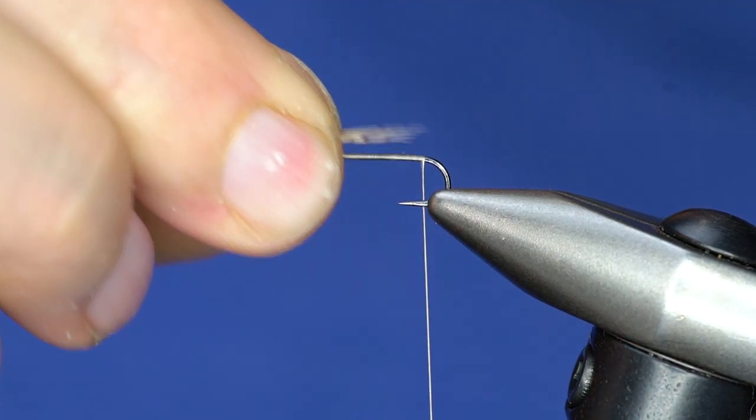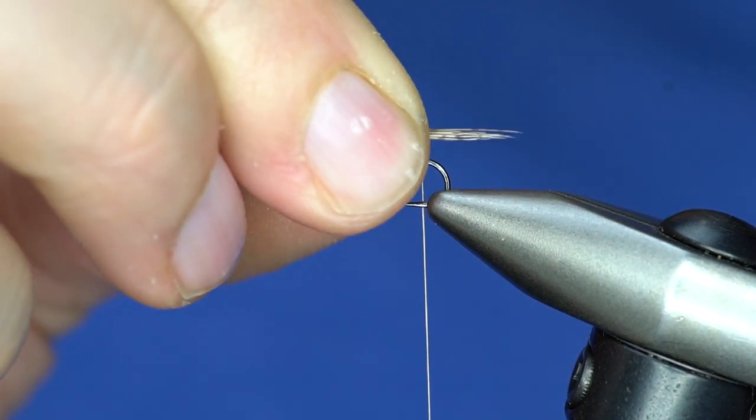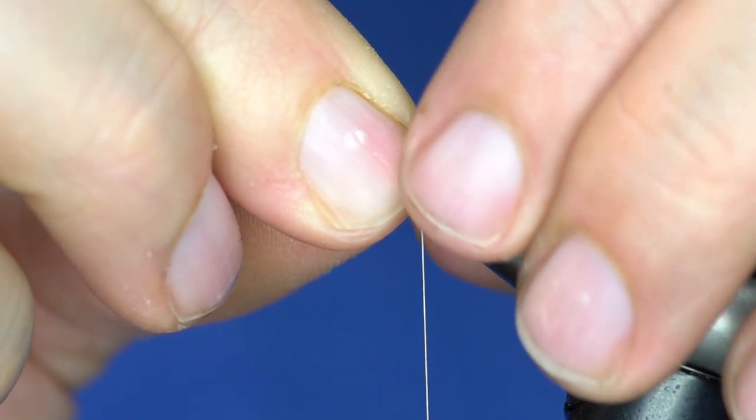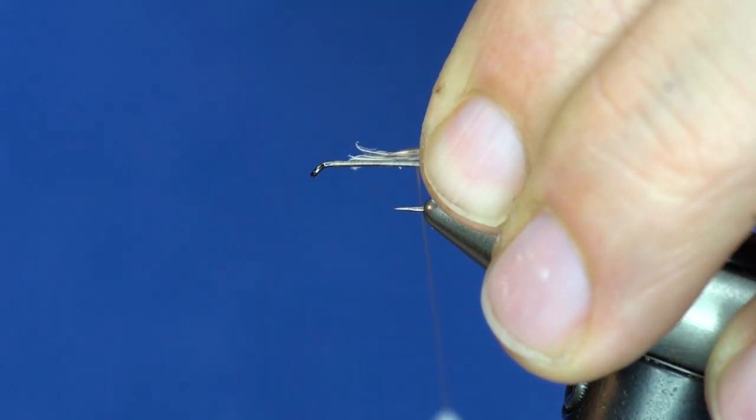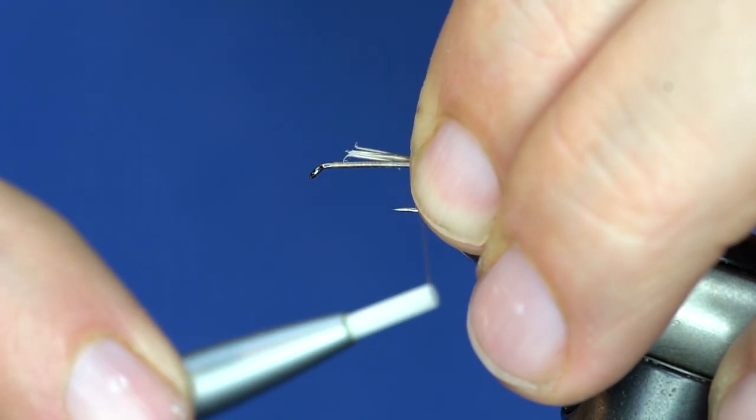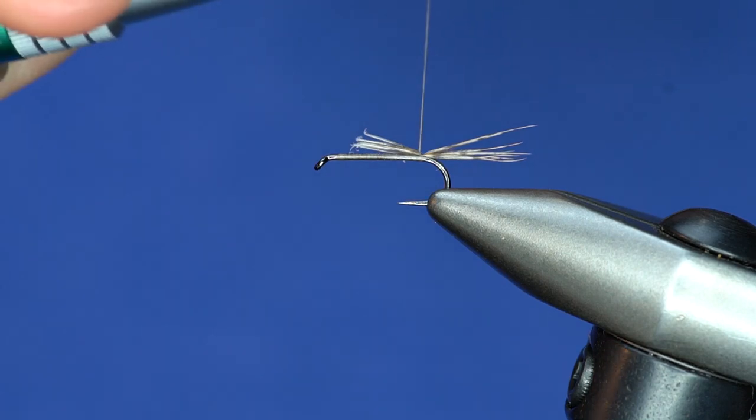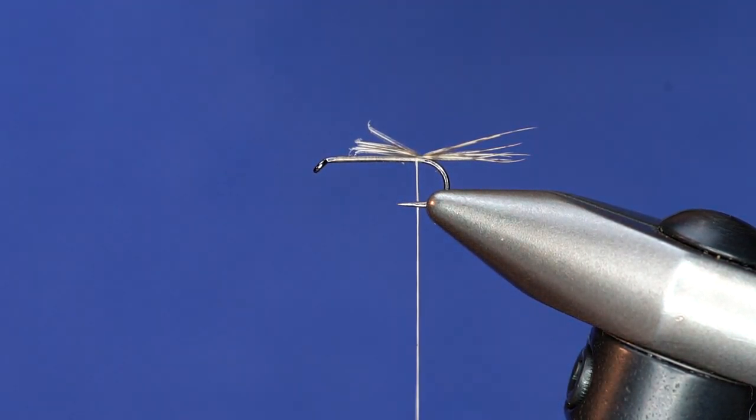So I'll just peel a few of the fibers off of this one to use for the tail. So here we've got our partridge fibers and I'll just measure out a little bit less than the hook shank length, about like that. And then just do a little pinch wrap to get those on. And you just want those to be on the top and just a couple of turns to secure them.